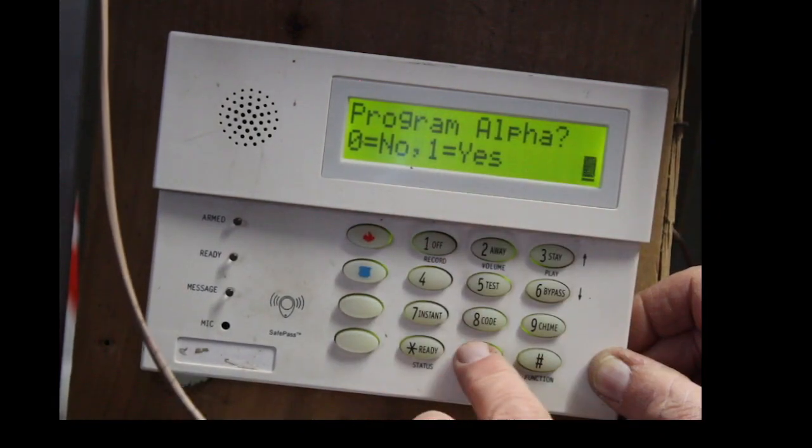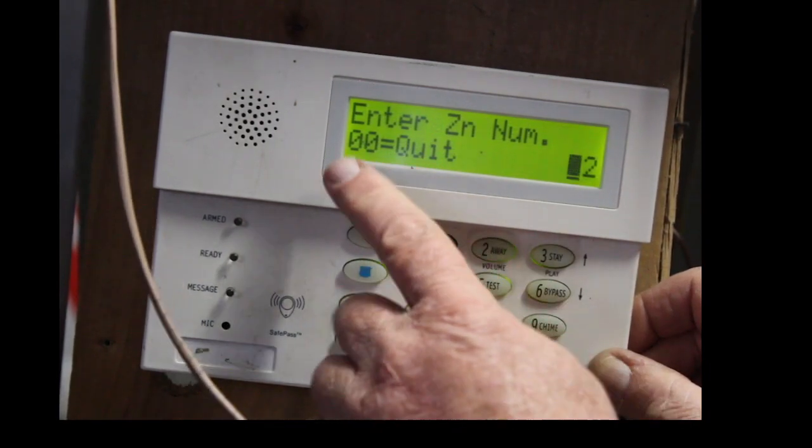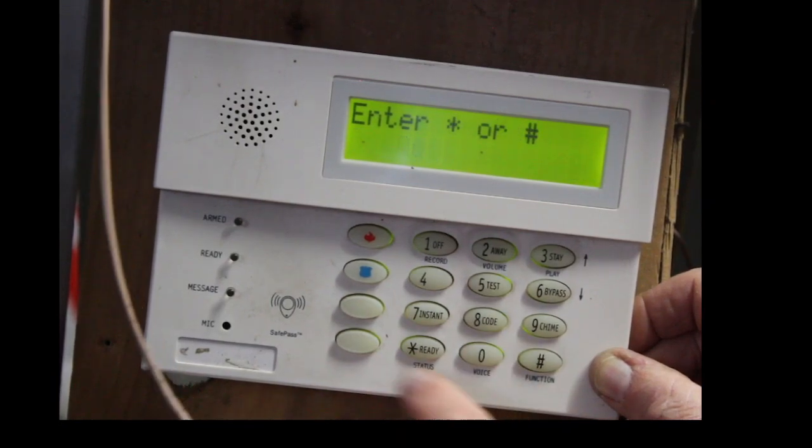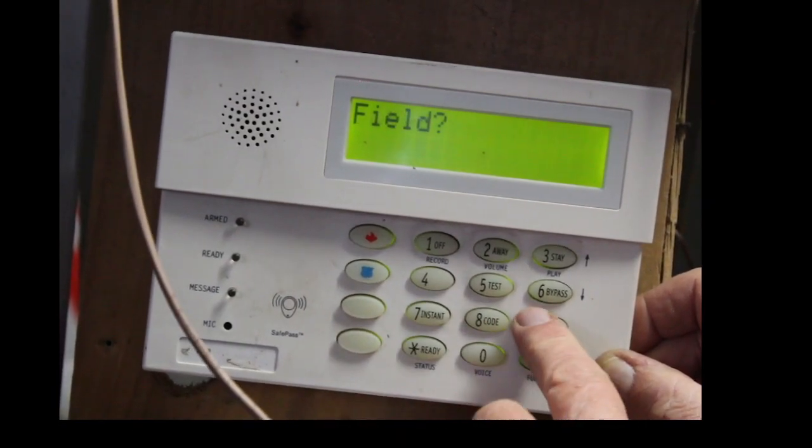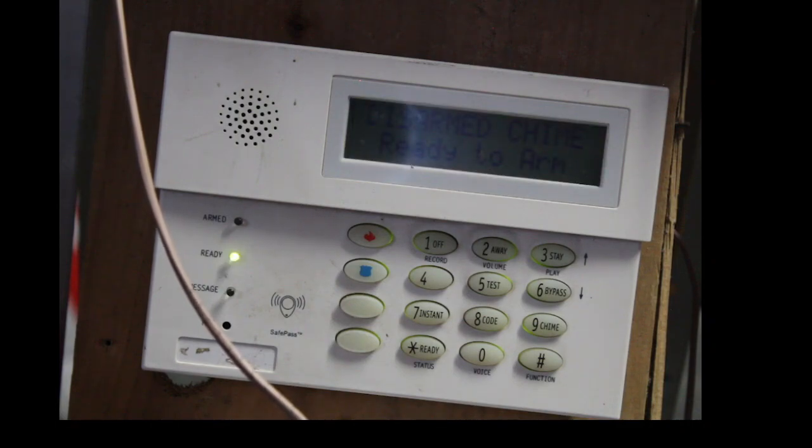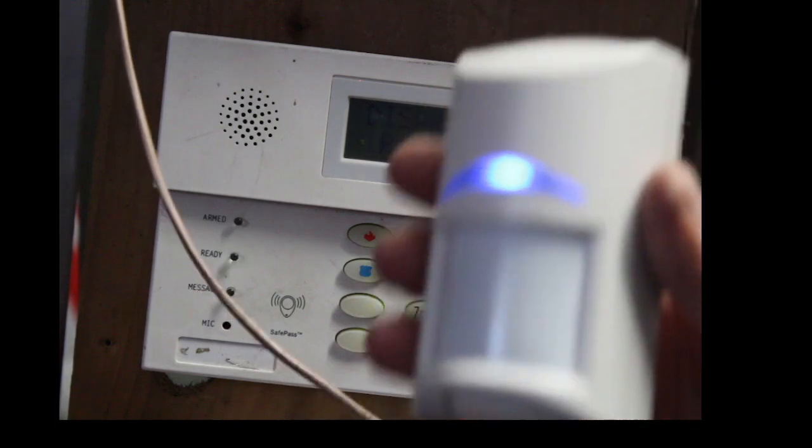Program alpha. Just say no. I'm not going to go into that. And then, once it says enter zone number again, just hit 00. And then, star 99 to get out. That's it. The motion detector is now programmed into the system.